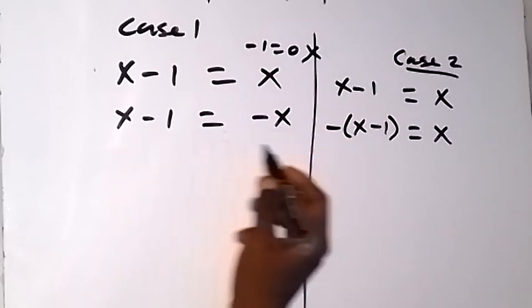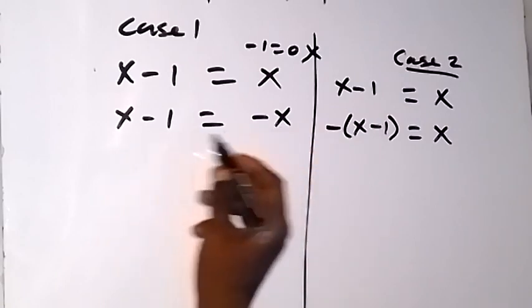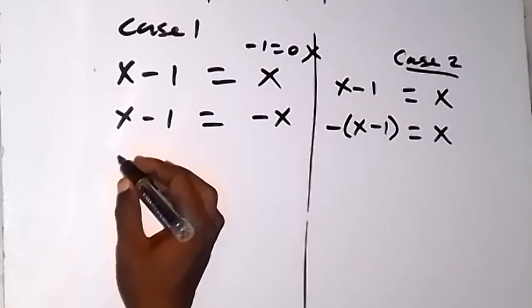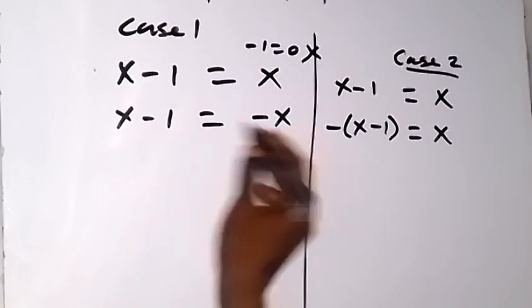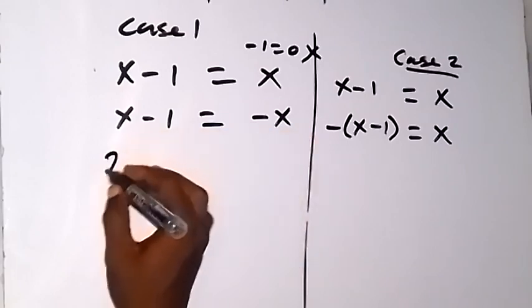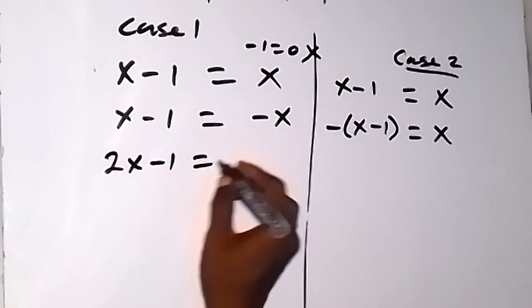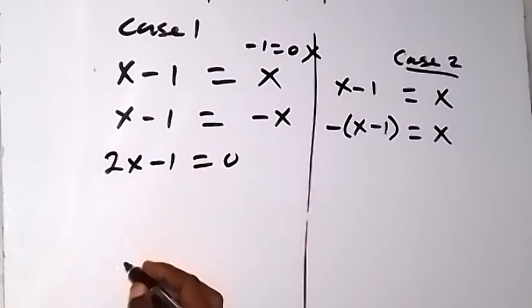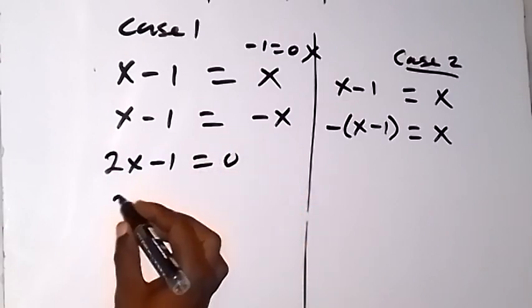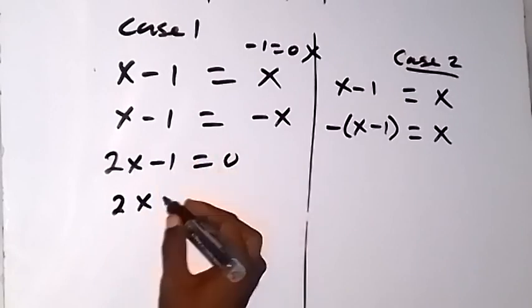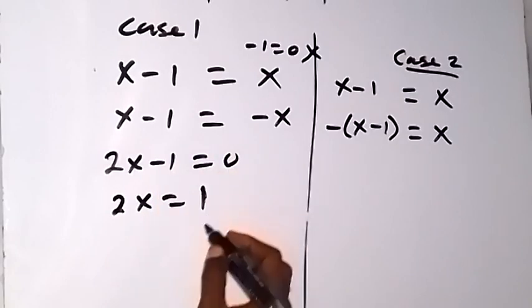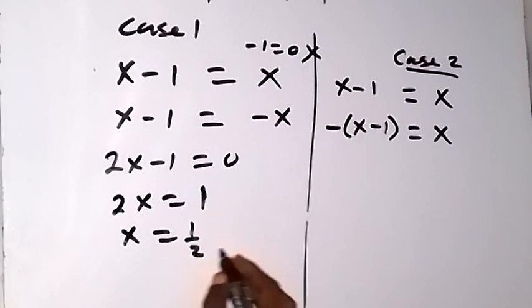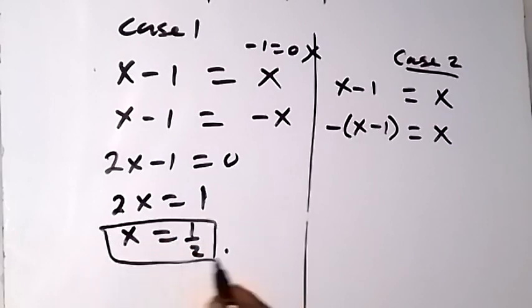In the second equation of case 2, when we take this x over, we have x plus x, that's 2x minus 1 equals to zero. Then 2x equals to 1 — taking minus 1 to the other side, it becomes plus 1. Therefore, x equals to half. Same thing as the solution we got.